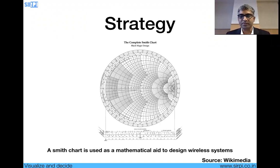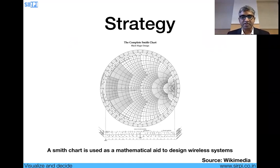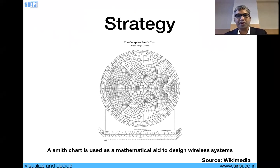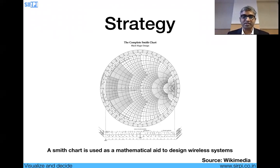The Smith Chart — some of you might have seen this, especially electrical or ECE engineers. This mathematical chart is indispensable for wireless design engineers. The center represents 50 ohms, the left-hand side represents a short circuit, the right-hand side represents an open circuit, and all RF and antenna designs are done based on this chart. The top portion represents the inductive area, the bottom the capacitive area, and the full play of electromagnetics is an exchange of energy between them.